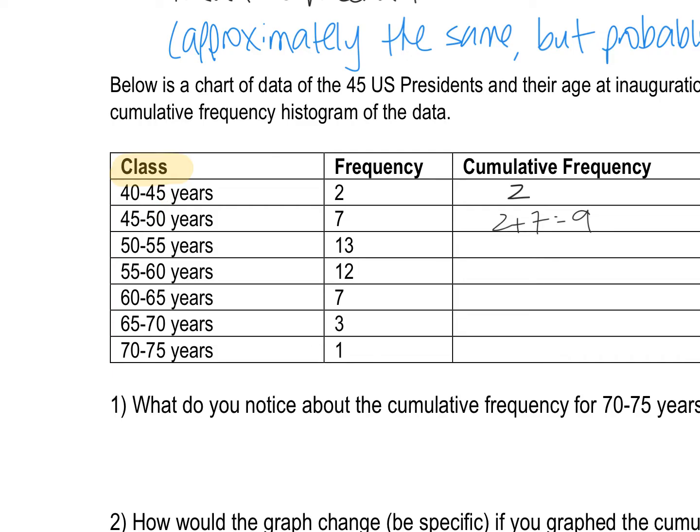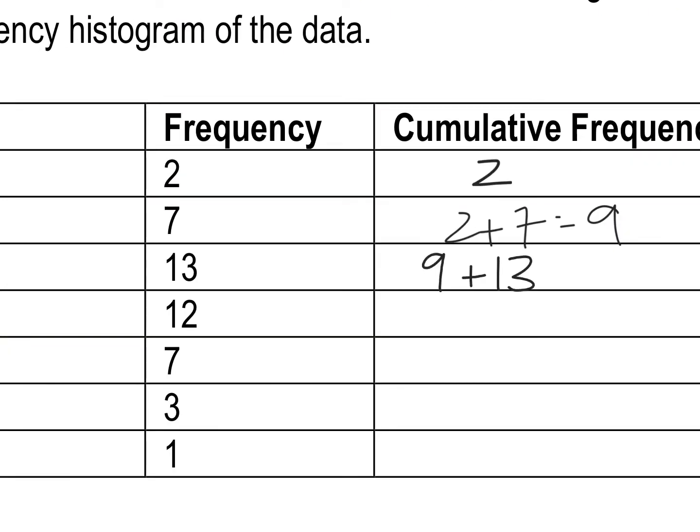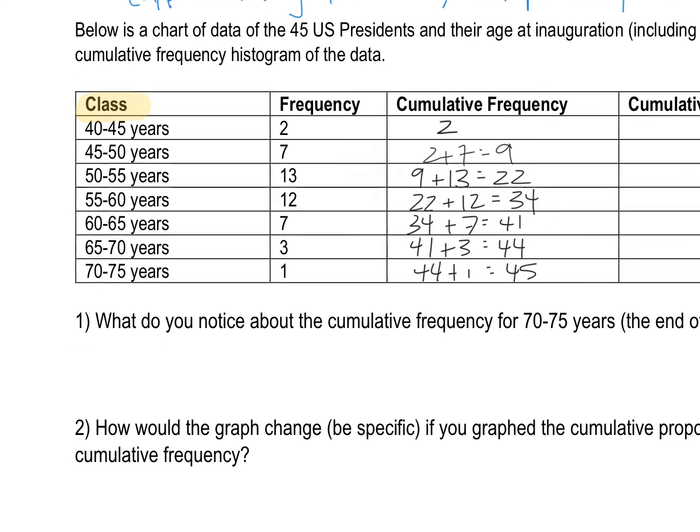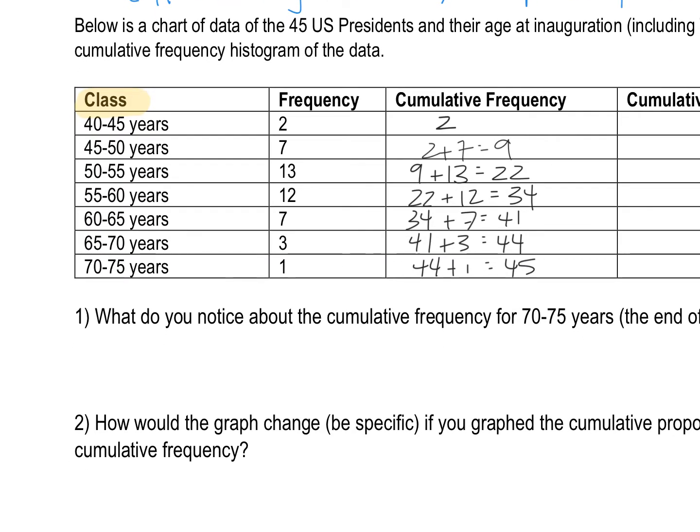And I'm going to keep adding the previous tallies to my next number. I'm going to take my nine and I'm going to add the 13 here and that gives me 22. Now I'm taking the 22 and adding the 12 new presidents to the categories, and that gives me 34. Then I'm starting with 34 presidents and adding another seven as I'm moving my way down the table, which gives me 41. I'm taking my 41 presidents and adding three, which gives me 44. Taking my 44 presidents and adding Donald Trump, and that gives me 45 total. That's going to be my cumulative frequency tally in this table.